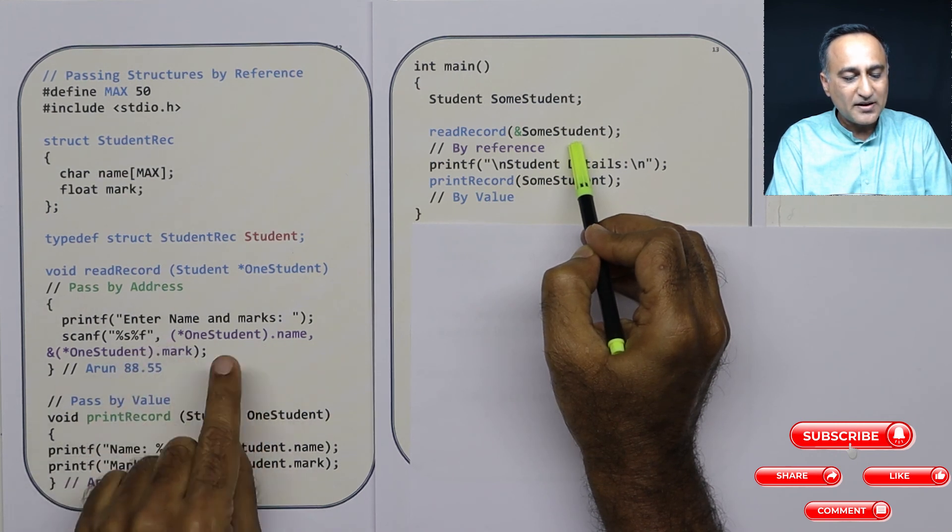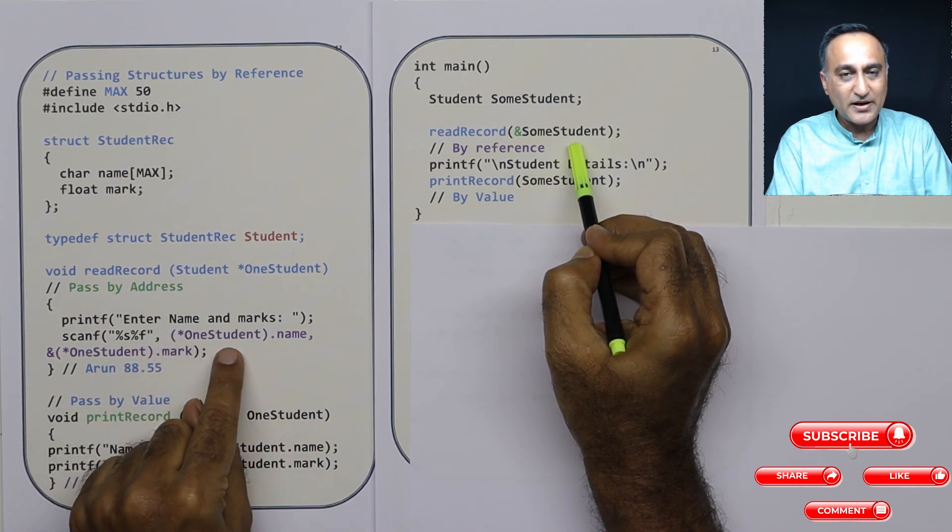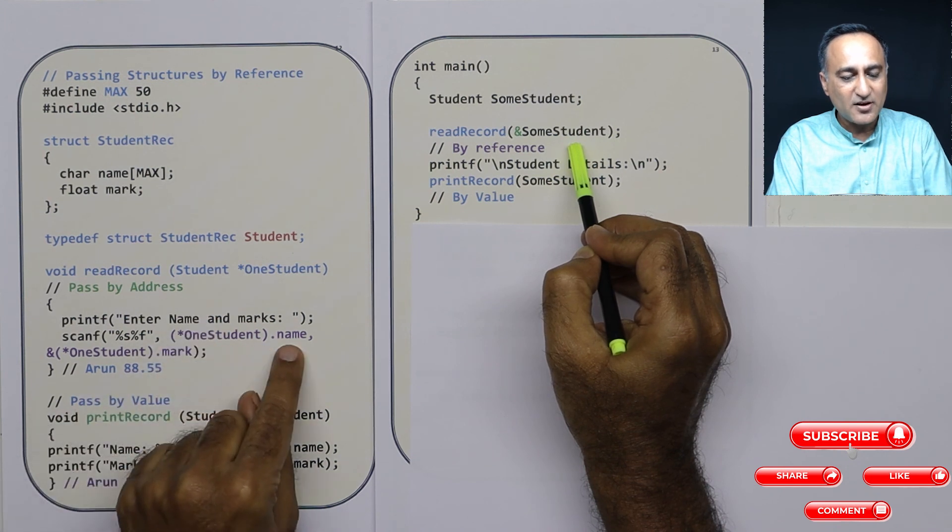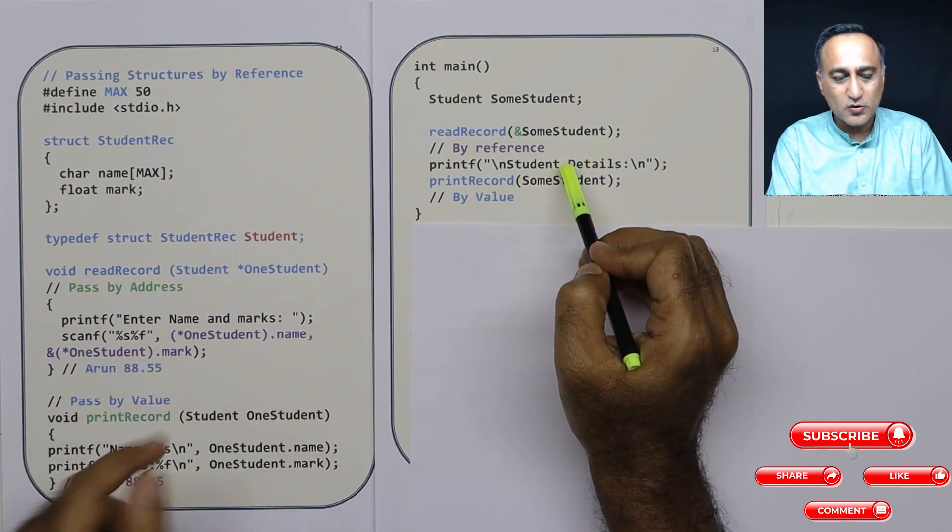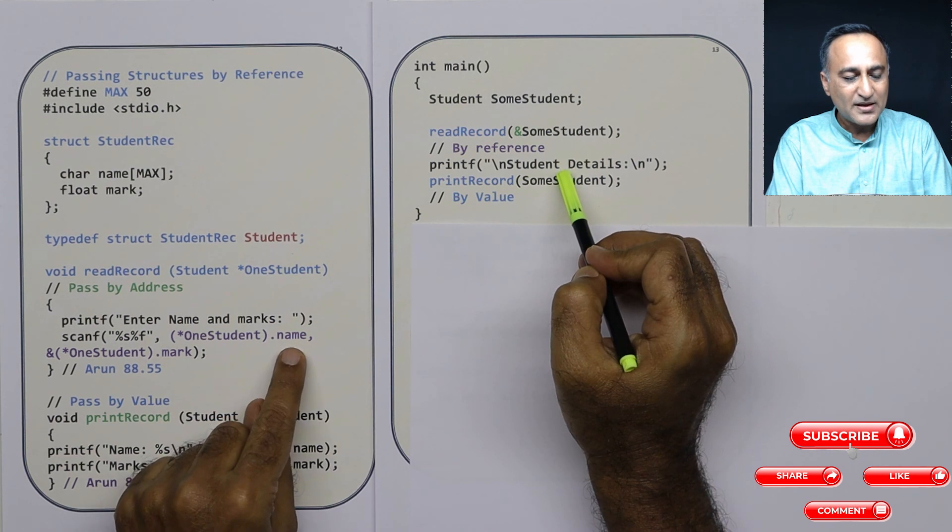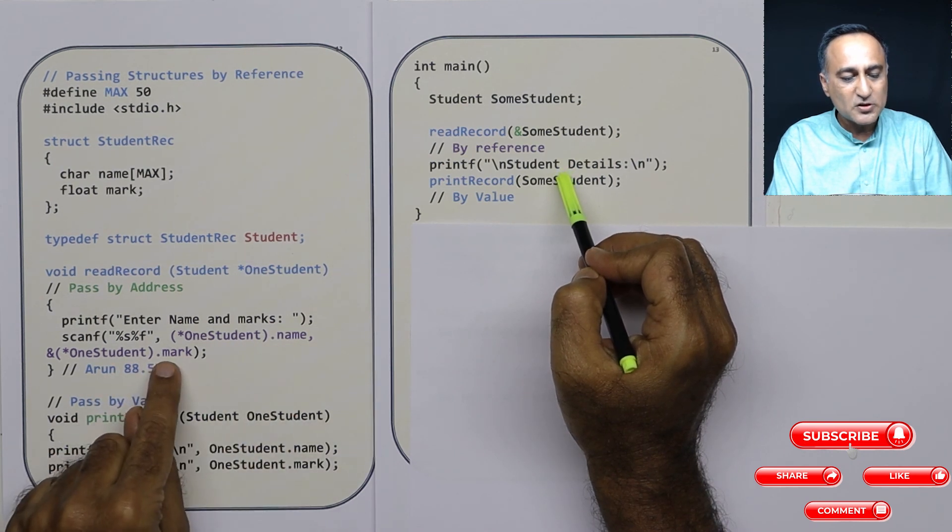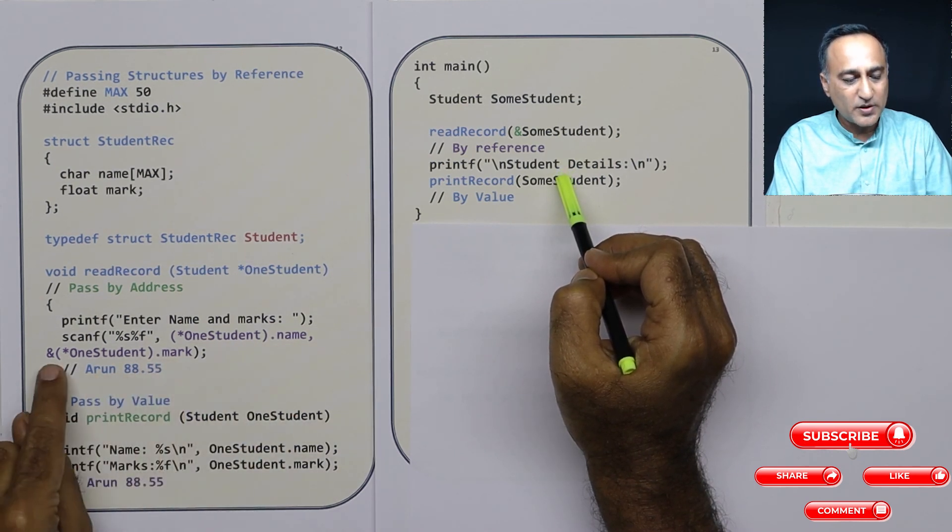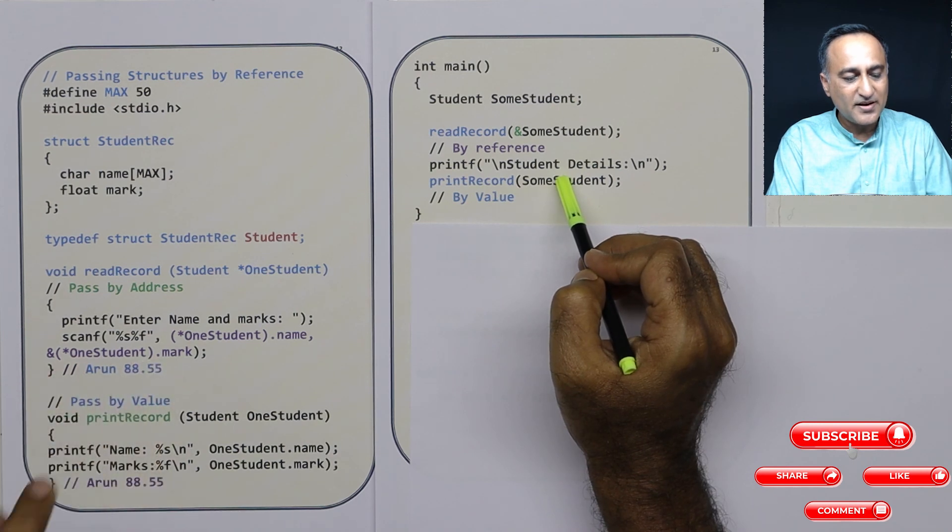So by putting it first what happens is address of that particular structure, then dot name, that content is going to be stored at the address of name. Similarly, here the content is going to be stored at address of mark. That's why you have this parenthesis here and then the ampersand.